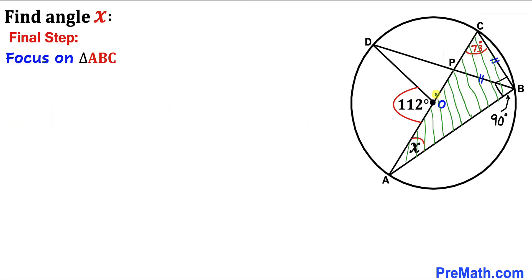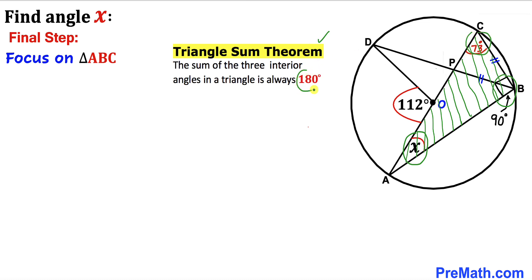Here's our final step. Let's focus on triangle ABC. Now let's recall the triangle sum theorem. According to this theorem, the sum of all three angles in triangle ABC must be 180 degrees. Therefore, x plus 90 degrees plus 73 degrees all add up to 180 degrees.